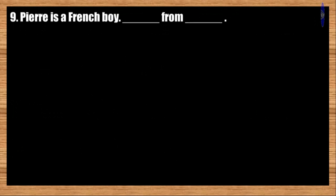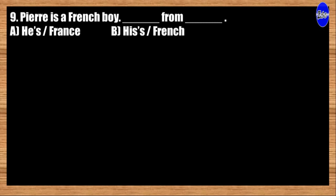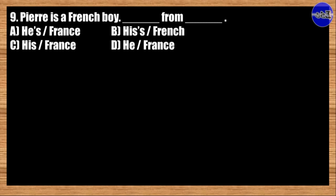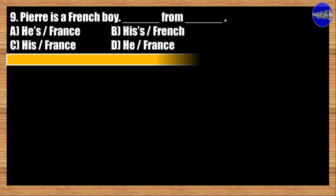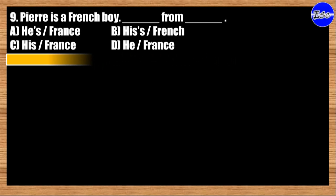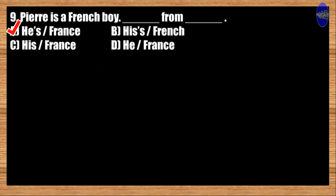Number nine: Phil is a French boy. Blank from blank. A: He is from France; B: His friends; C: His friends; D: He, friends. The correct answer is option A. Phil is a French boy. He is from France.